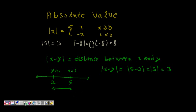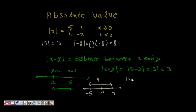Let's find the distance between -5 and 4. So 4 is on one side and 5 units are on the other side, giving a total of 9. The length is 9 units. This is 4 plus 5 which is 9. So the absolute value |x - y| gives us the distance between number x and number y.